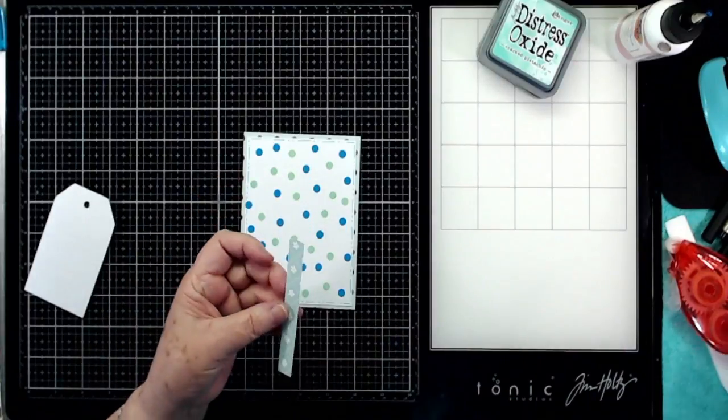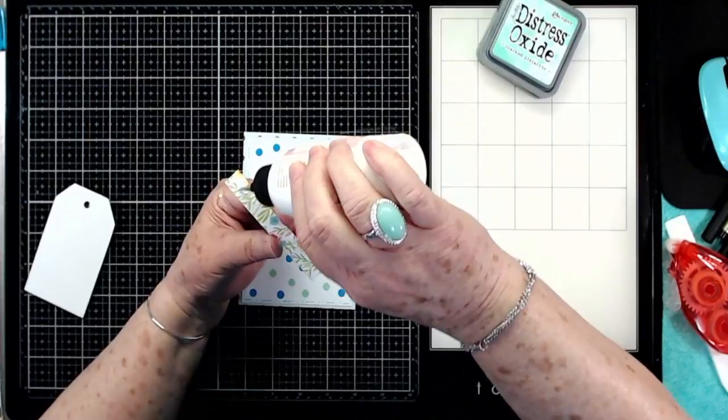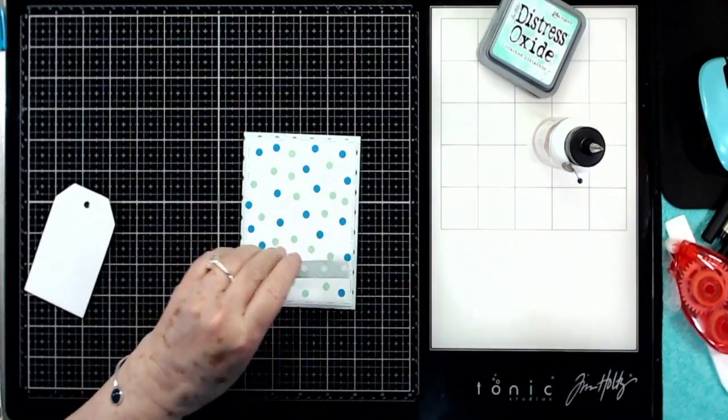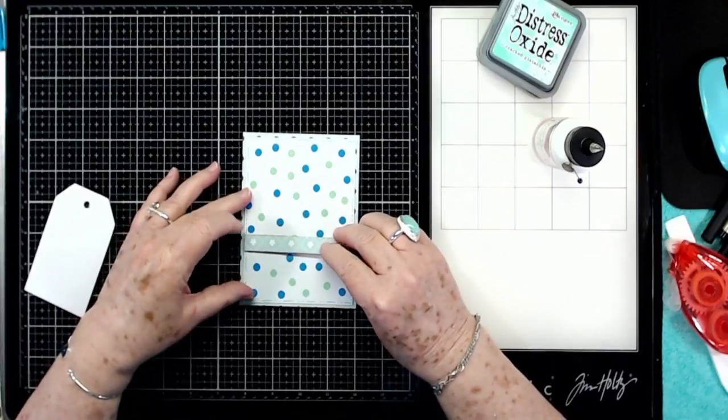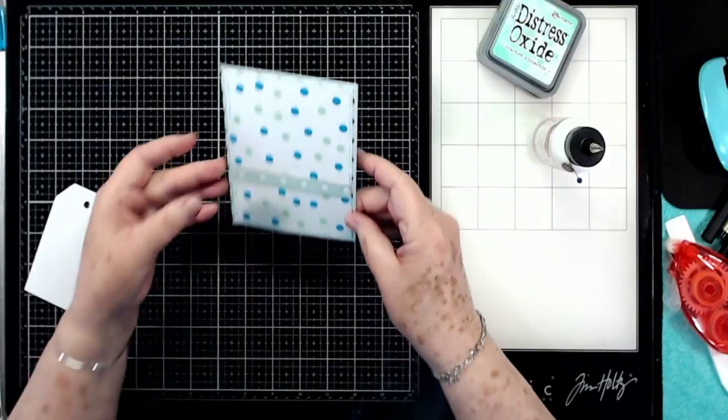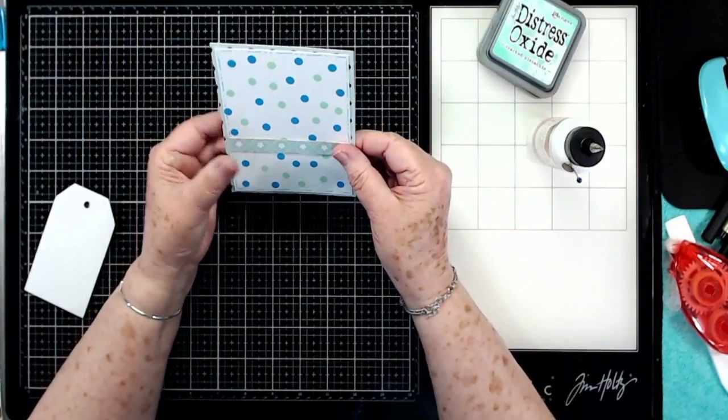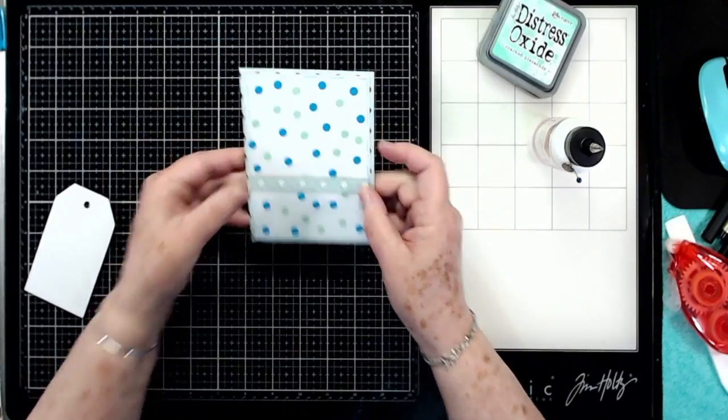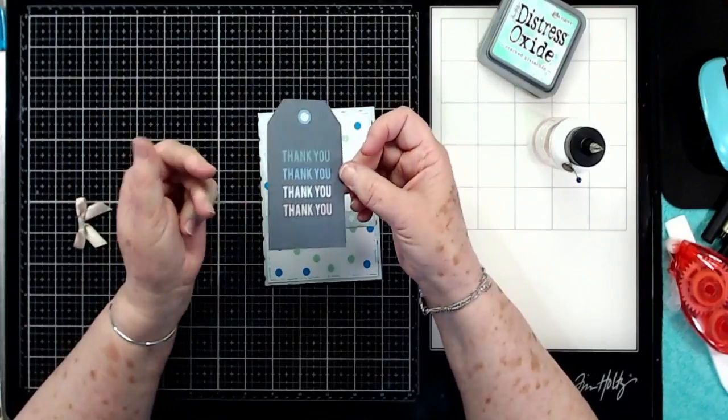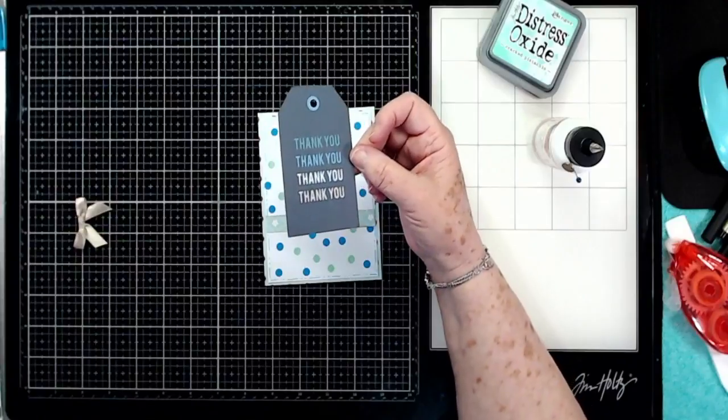There we go, so we're going to glue this straight down. And I'm going to glue it sort of close to the bottom, closer to the bottom than the top, like that. And then I just cut this out of an ephemera pack - it was out of a piece of paper.